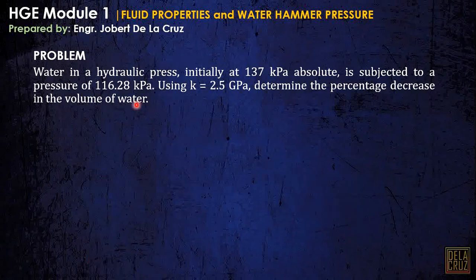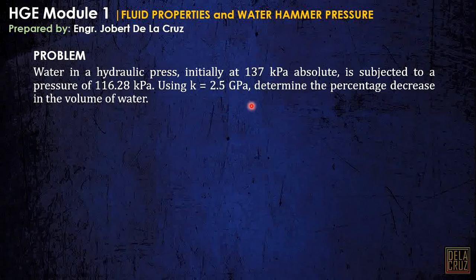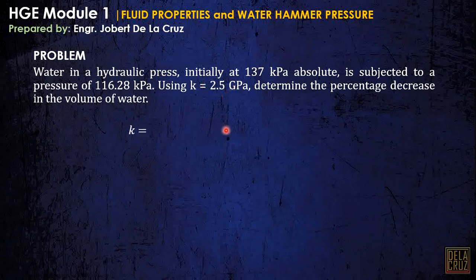For another example: water in a hydraulic press, initially at 137 kilopascal absolute, is subjected to a pressure of 116.28 kilopascal. Using K as 2.5 GPa, determine the percentage decrease in the volume of water. Percentage decrease means the volumetric strain, or change in volume over the original volume. We use the bulk modulus formula.